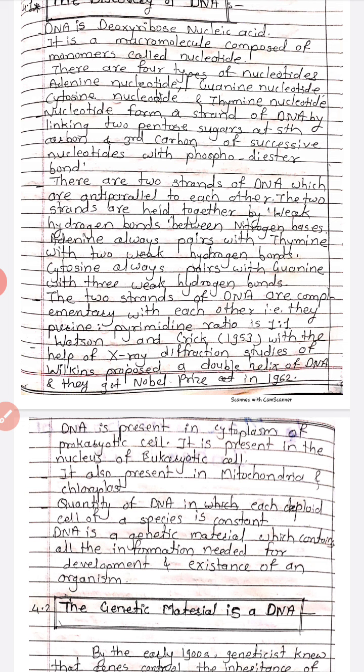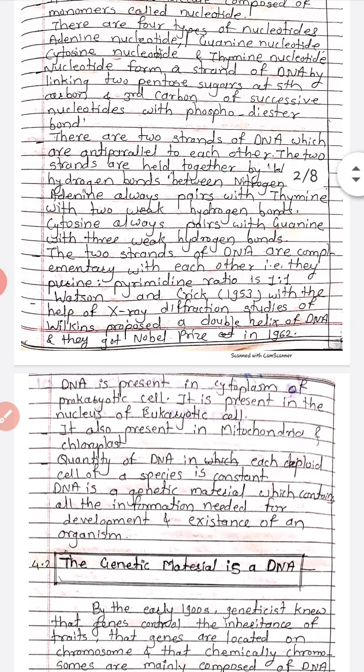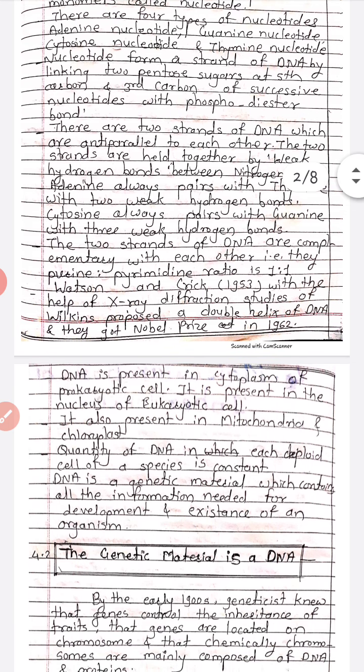Adenine always pairs with thymine — A pairs with T — with two weak hydrogen bonds. Cytosine always pairs with guanine with three weak hydrogen bonds.